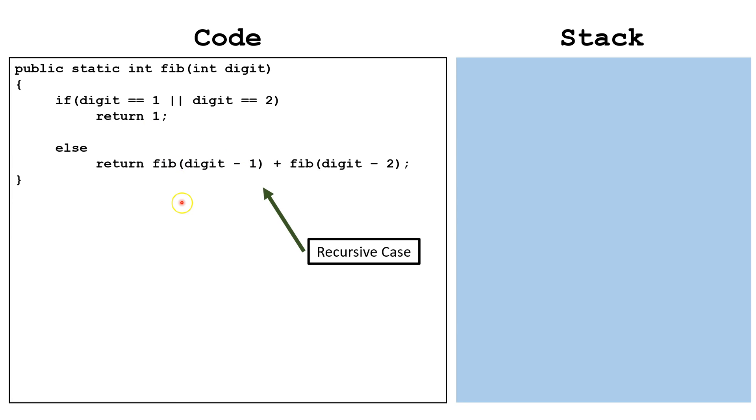In our recursive case, we're going to add the sum of the digit before the current one, and the digit that's two digits before the current one, and we're going to call the same method to calculate it.